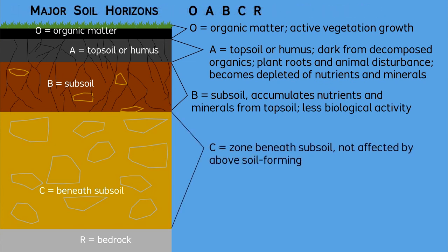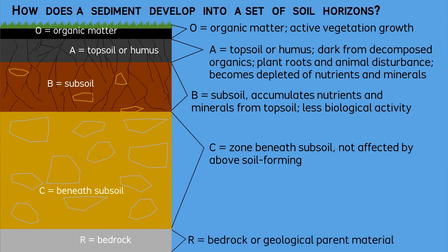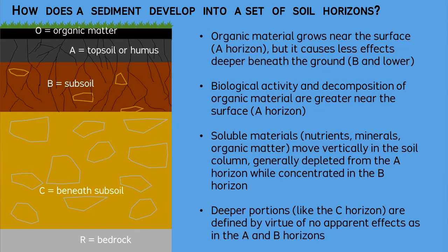The next underlying unit can be described as the C horizon. This depth typically is beneath the reach of the effects that created the A and B horizons. Beneath the sedimentary unit, eventually you will encounter a bedrock of a geological formation. The upper portion of the bedrock in most cases has been altered through weathering and contact with the overlying sediment. Overall, a soil profile can be described as a sedimentary layer that has undergone a number of processes, resulting in a set of internal horizons.